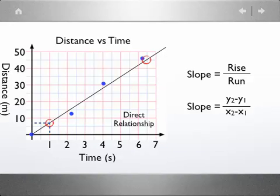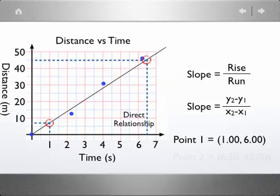Then what I'm going to do is I'm going to use my coordinates or my scale to determine the coordinates of each point. So my first point is at 1, 6, and then the second point is at 6.5, 45. So I have two sets of ordered pairs here.